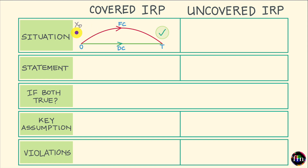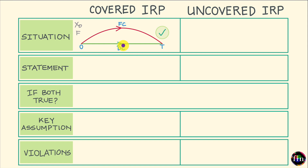At this point in time, our investor can also observe the forward price of one unit of FC for delivery at future time T — F is expressed in DC. This investor wants to invest a certain sum of money in DC for the period ending at time T. The investor has two investment choices: the first is to invest in a money market instrument denominated in DC offering a rate of interest RDC.